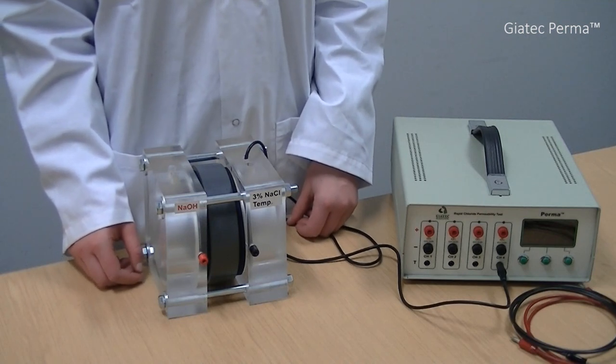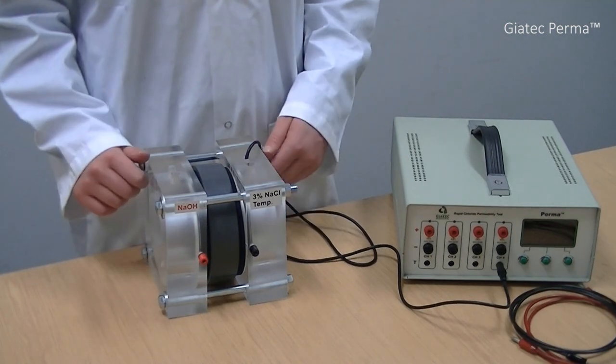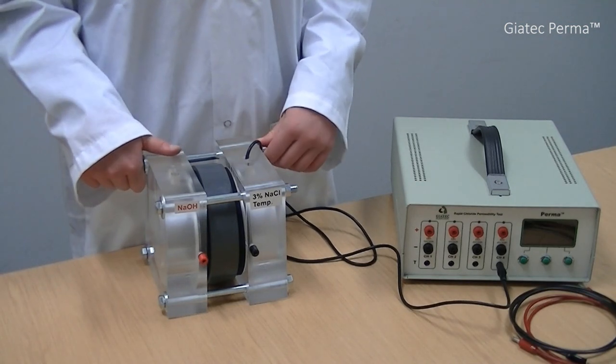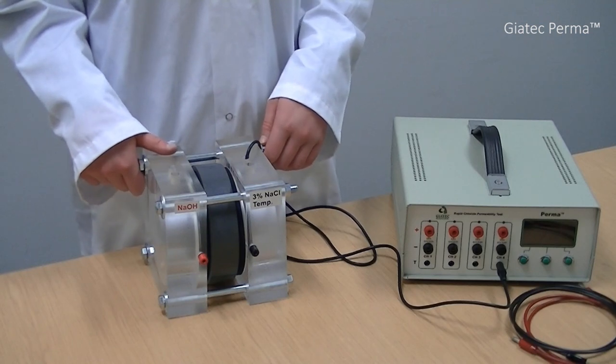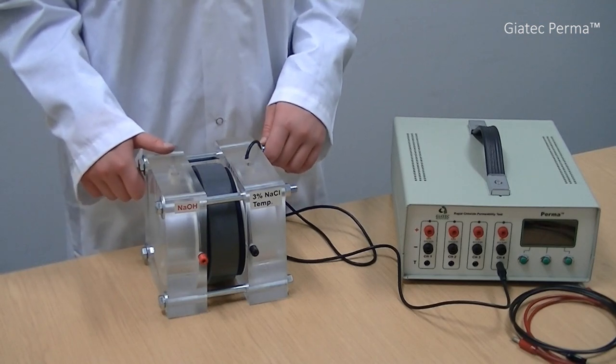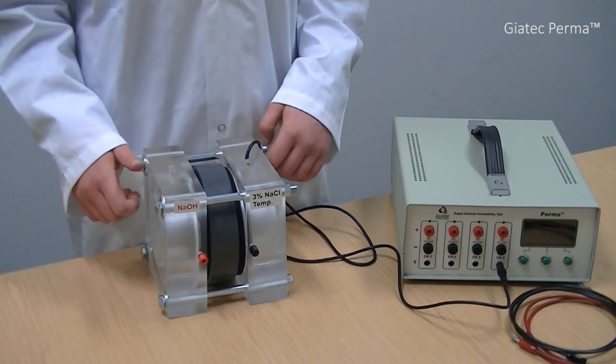If there is any leakage, first try to tighten the bolts and refill the cell with liquids. You can use silicone glue to seal the space between the connector and the cell. You may also need to adjust the position of the rubber gaskets to fix the leakage problem.